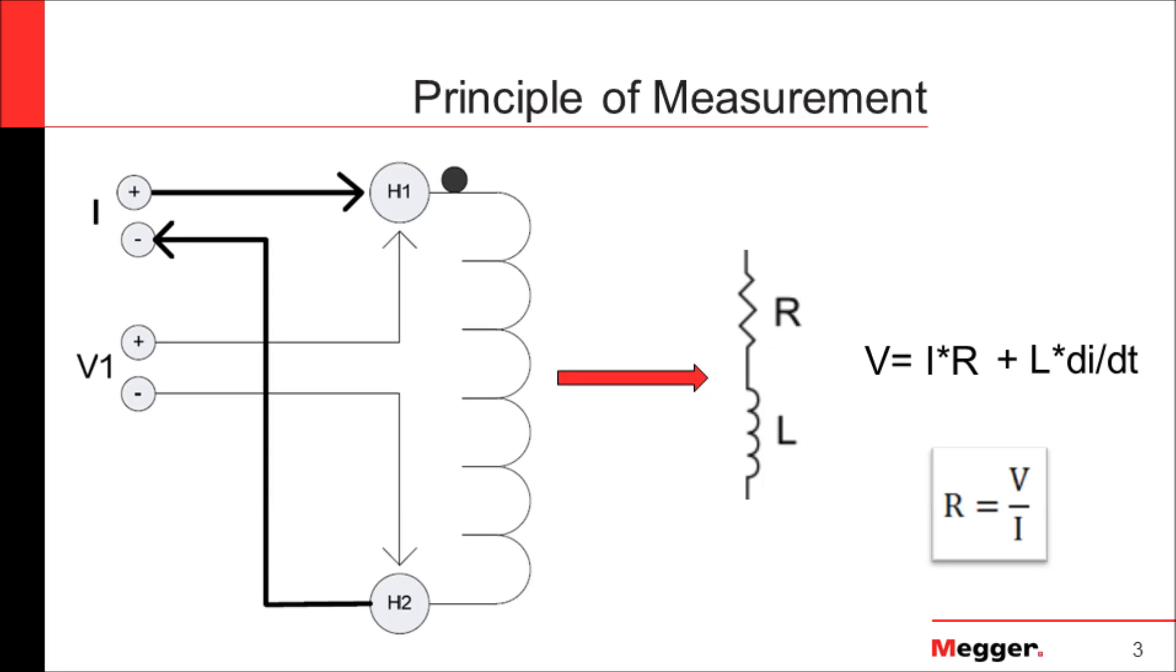As we're applying DC, changing the current to whatever our test current is, the inductance is dominant until such time as our current stabilizes. Once it stabilizes, we are left with just the resistance itself. With that, if we have the current and the voltage, we are able to determine the resistance using R = V/I. This is a principle of measurement which many of us commonly understand.